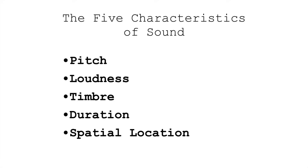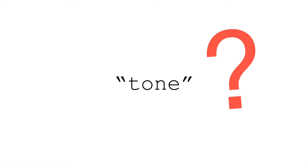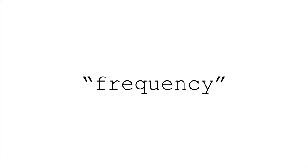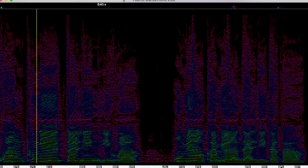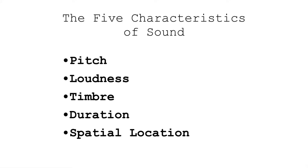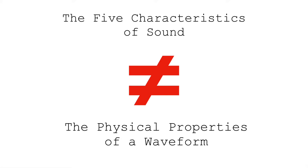When I ask students to guess these five characteristics of sound, I get some other suggestions. Tone is a common one, which is an ambiguous term that might mean pitch or might mean timbre. Another one I often get is frequency. Frequency is not one of the characteristics of sound, because frequency actually contributes to both pitch and timbre, and honestly, loudness to a certain extent. Frequency isn't one of the characteristics of sound, but it is one of the physical properties of sound. These physical properties of sound are related to our perception, but it's good to understand that they're not the same thing.